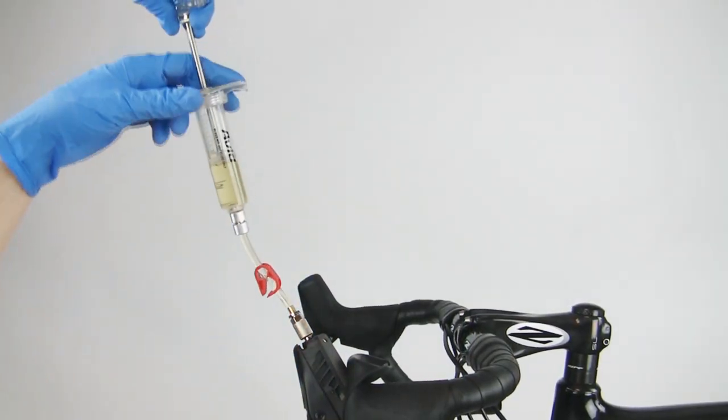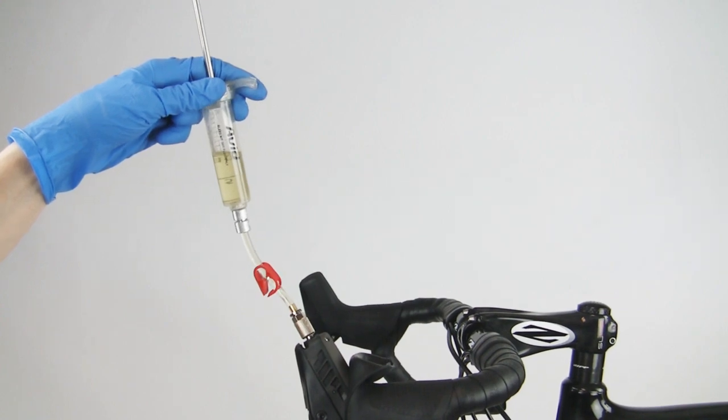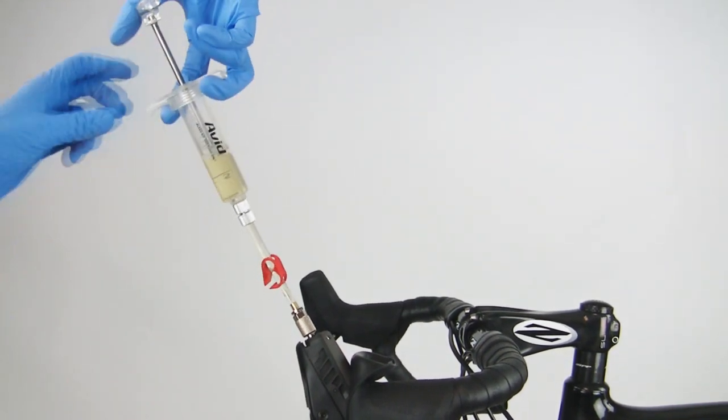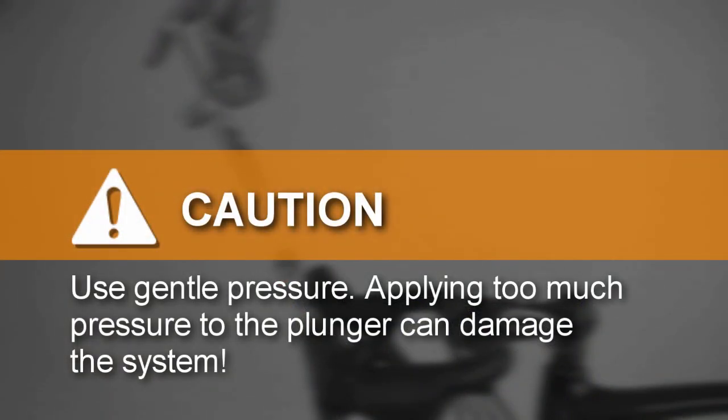Open the clamp on the lever syringe. Pull out on the lever syringe plunger, then gently push in on the plunger to pressurize the system. Use gentle pressure. Applying too much pressure to the plunger can damage the system.